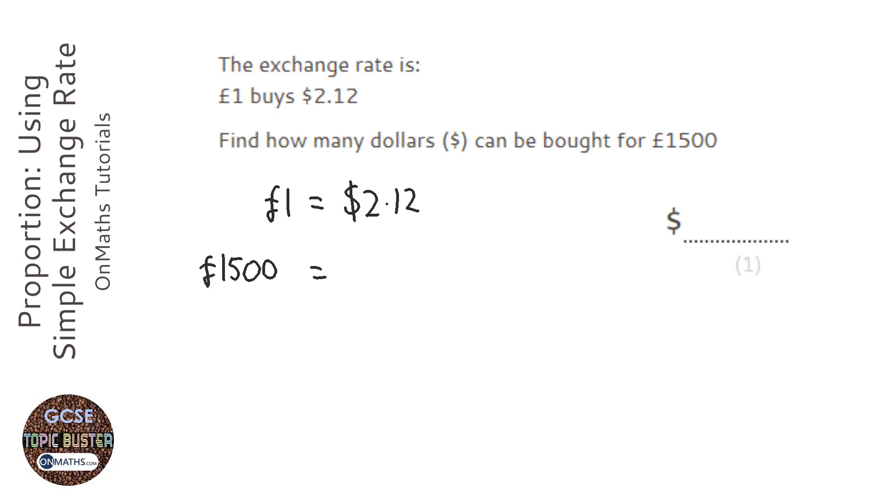So, to get from £1 to £1,500 we times by £1,500, and so we just do the same to this side as well.